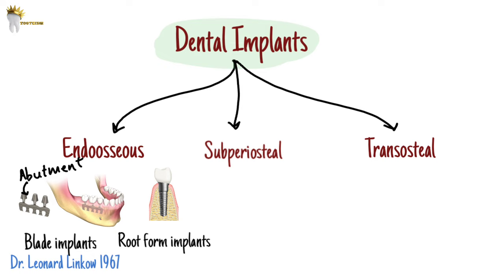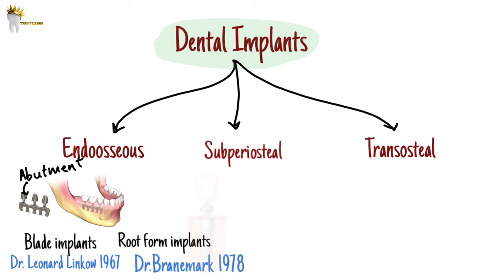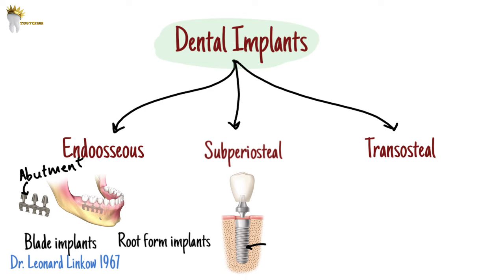Root form implants are the most commonly used, and they were first invented by Dr. Brånemark in 1978. The root form implant usually has two parts. One part, which is inserted in the bone, is called the fixture, and the other part, which is called the abutment, is immediately or later fixed to the fixture and emerges out of the soft tissues to hold the prosthesis.